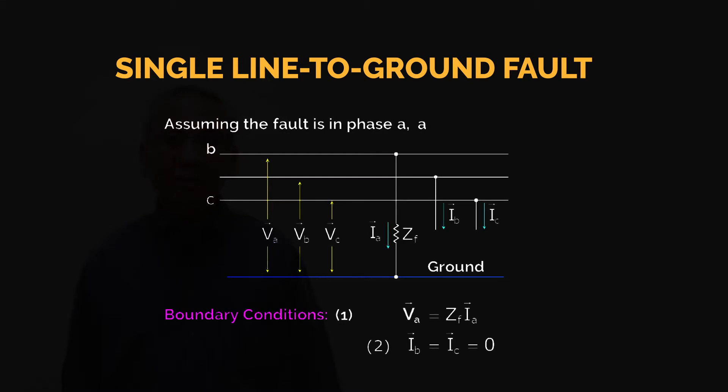Now, for single line-to-ground fault, assuming the fault is in phase A. In this diagram, we have line A is faulted to an impedance ZF. IB, the current flowing to line B, is zero since it is not under fault condition. Likewise, for line C, IC is equal to zero.